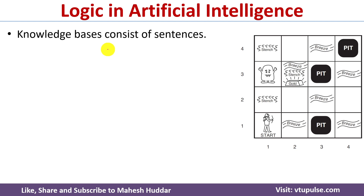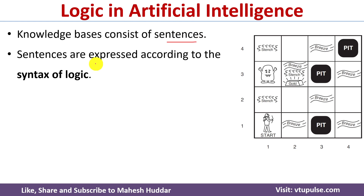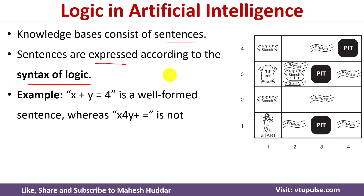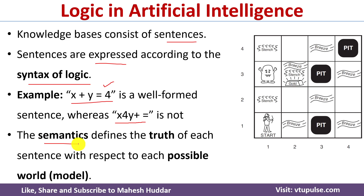A knowledge base for any example is nothing but a collection of sentences. Sentences are expressed according to the syntax of logic. For example, x plus y equals 4 is one well-formed sentence, whereas x 4 y plus equal to is not a well-formed sentence. There is also the concept of semantics in logic, which defines the truth or falsity of a given sentence in each possible model.